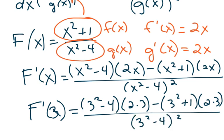And let's see, 3 squared is 9 minus 4, that gives me 5, so the top is 5 times 6, minus 3 squared plus 1 is 10 times 6, and then 3 squared minus 4 is 5, 5 squared is 25.